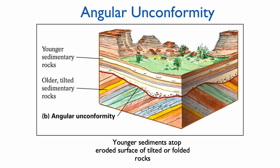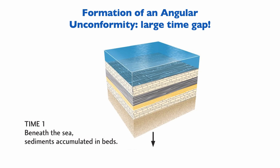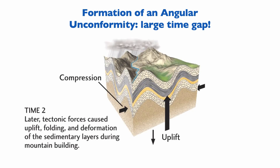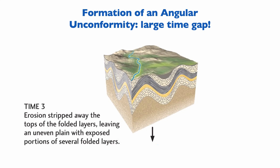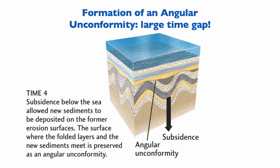Another common type of unconformity is the angular unconformity, which represents a significant time gap. To form one, you first deposit sediments in the sea. Then, in a tectonic event, you uplift and fold them — that's the tectonic stage. Next, those folded sediments are eroded to obtain a planar surface. Finally, sea level rises and a new series of sediments is deposited on top. Each of these four steps requires time, so overall an angular unconformity represents a significant time gap.